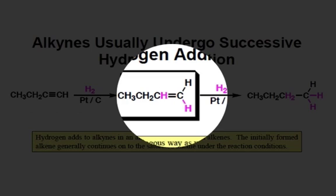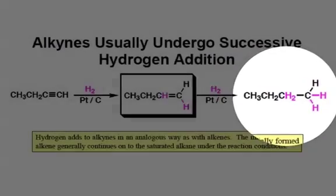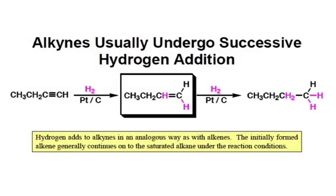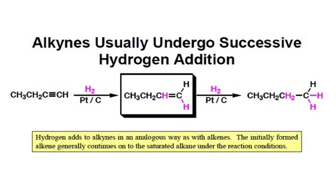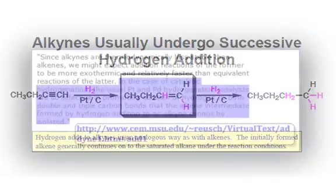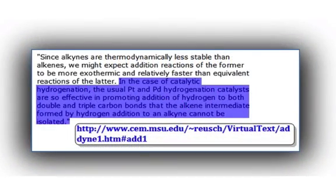In a subsequent hydrogenation, we'll generate the final product seen here. What is interesting about this hydrogenation reaction is that it occurs so fast that we cannot isolate this alkene intermediate. The reason why we cannot isolate this alkene intermediate is because the metal catalysts are just too good at what they do.